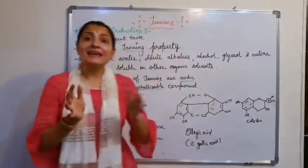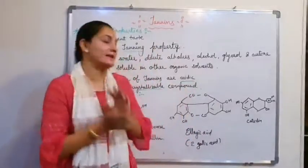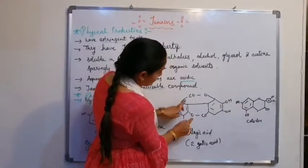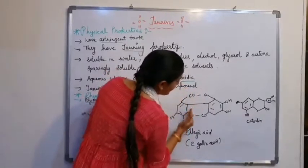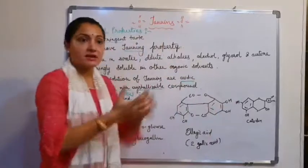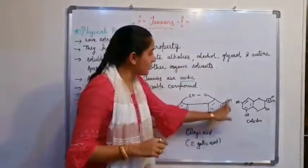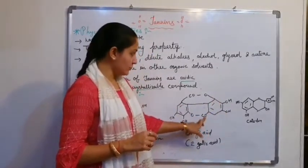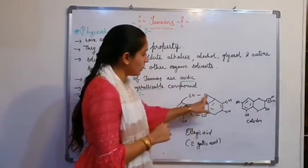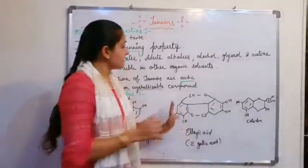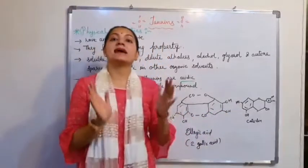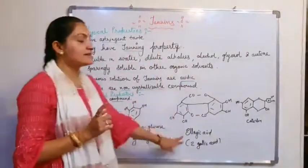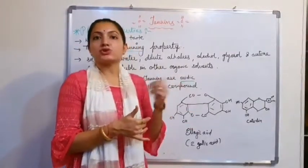Then ellagic acid. Ellagic acid is formed by the condensation of two gallic acid molecules. One gallic acid has OH, OH, OH, and COOH groups, and the second gallic acid has a twisted ring structure. With the removal of hydrogen atoms, the rings condense and give ellagic acid. If you remember the structure of gallic acid, it is easy to remember the structure of ellagic acid.